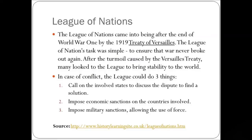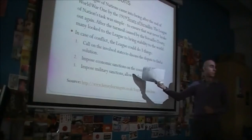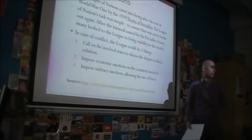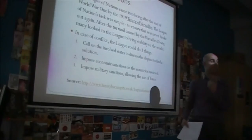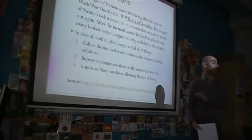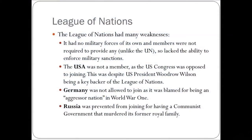The idea of the League of Nations was that in case of a conflict, there were three things they would do. One, they would get the parties to discuss the issue. Two, they would impose economic sanctions. And three, they would impose military sanctions — step by step. This is actually very similar to what the UN does to prevent conflict. But we're going to look at some of the differences between this, which failed, and the United Nations, which succeeded.